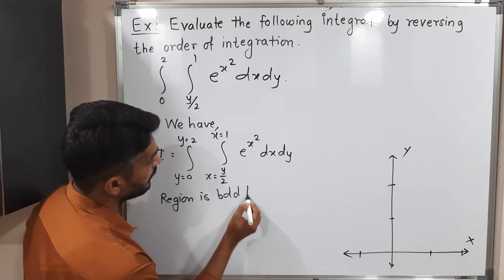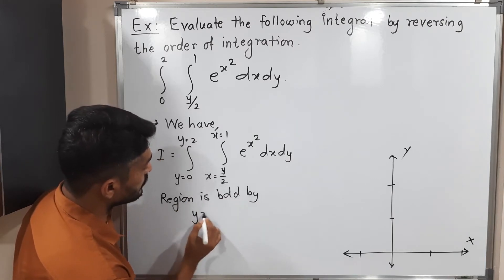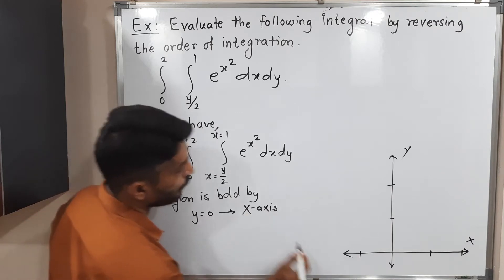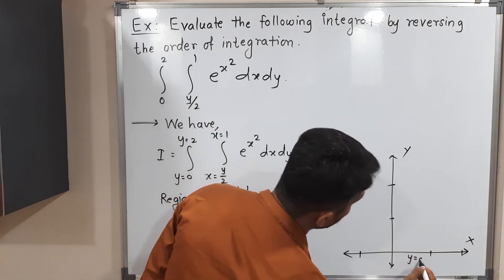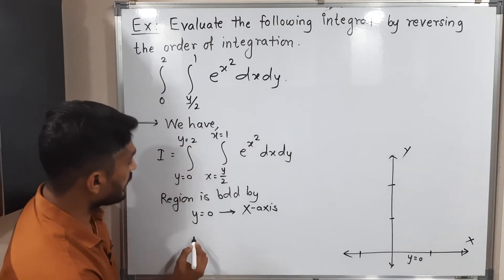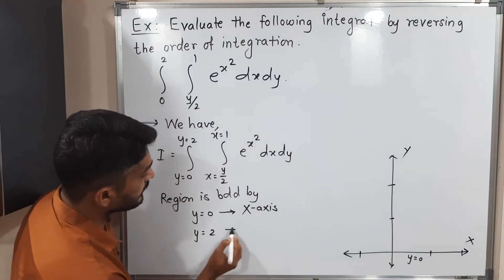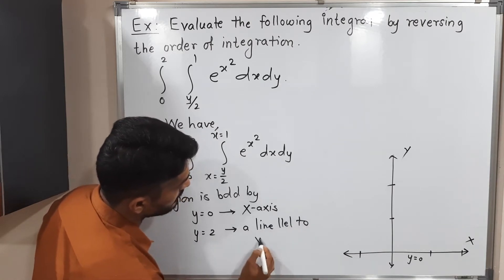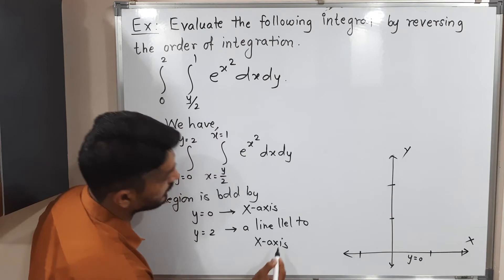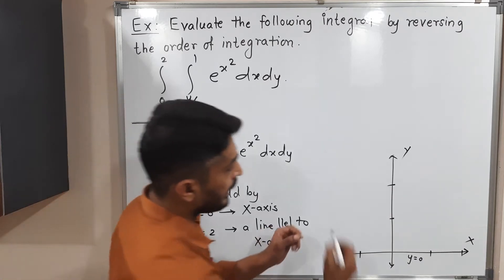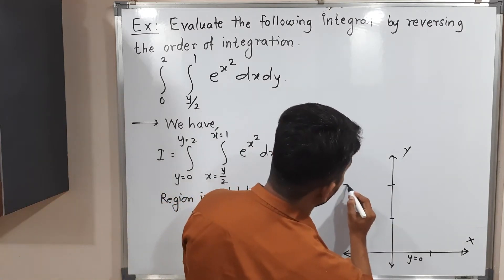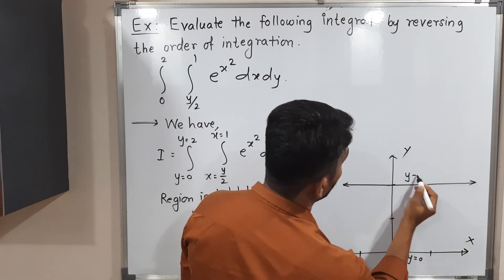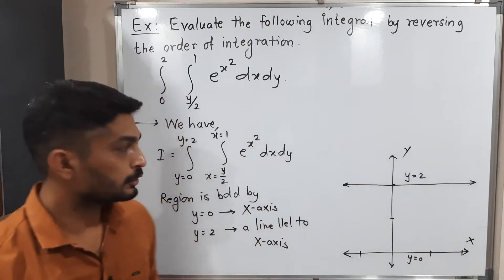The region is bounded by y equals 0, which is the equation of the x-axis. Next, y equals 2, which is a line parallel to the x-axis passing through y equals 2. So we have this line here.